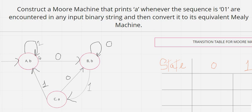Apart from the zero-one sequence, we can have any combination of inputs. At initial state A, I have a transition for zero but not for one, so I added a self-loop for one — it doesn't affect the sequence zero-one. State A now has transitions for both inputs, ensuring determinism. Moving to state B, we have a transition for one but not for zero, so I added a self-loop on zero, which also doesn't affect the zero-one sequence.